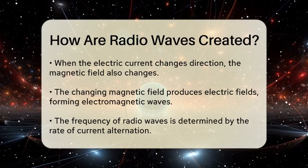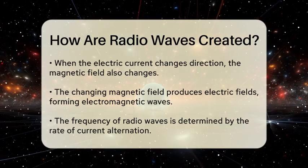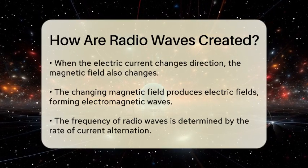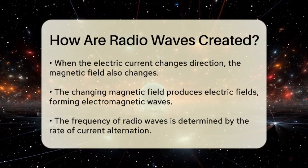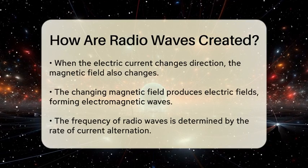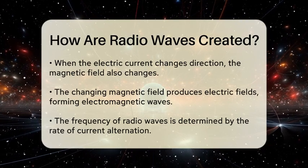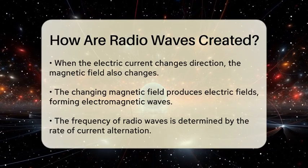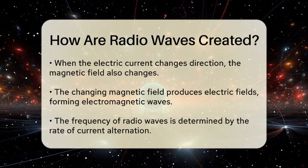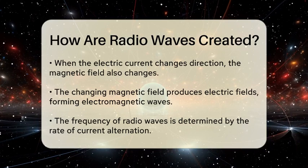This changing magnetic field generates electric fields, and together, they propagate through space as electromagnetic waves. The frequency of these waves depends on how quickly the electric current alternates.